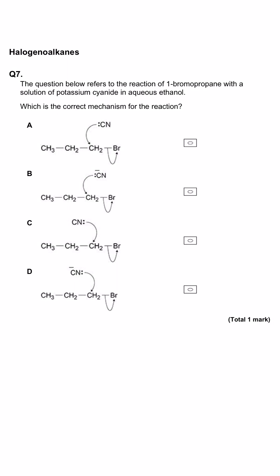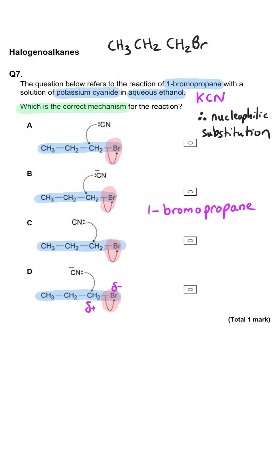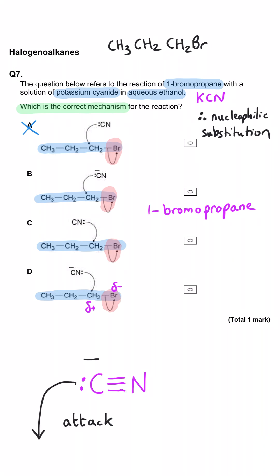Which is the correct mechanism for the reaction of 1-bromopropane with KCN in aqueous ethanol? All options show the bromine breaking its bond and taking the electron pair. The only difference is how the cyanide ion attacks. In A, the lone pair is correctly on the carbon, but the cyanide ion is not shown as negatively charged — so A is wrong. B is correct: the lone pair is on the carbon and the ion is shown as CN⁻. C is wrong on both counts — lone pair on the wrong atom and not negative. D has the lone pair on nitrogen instead of carbon. So B is correct.